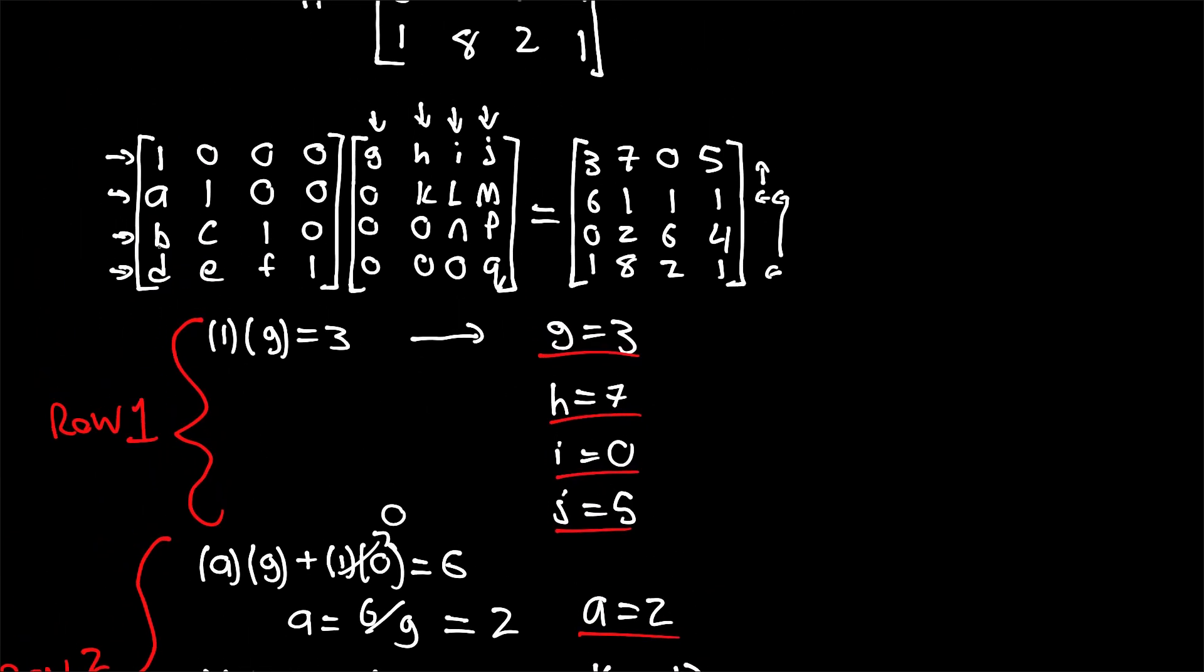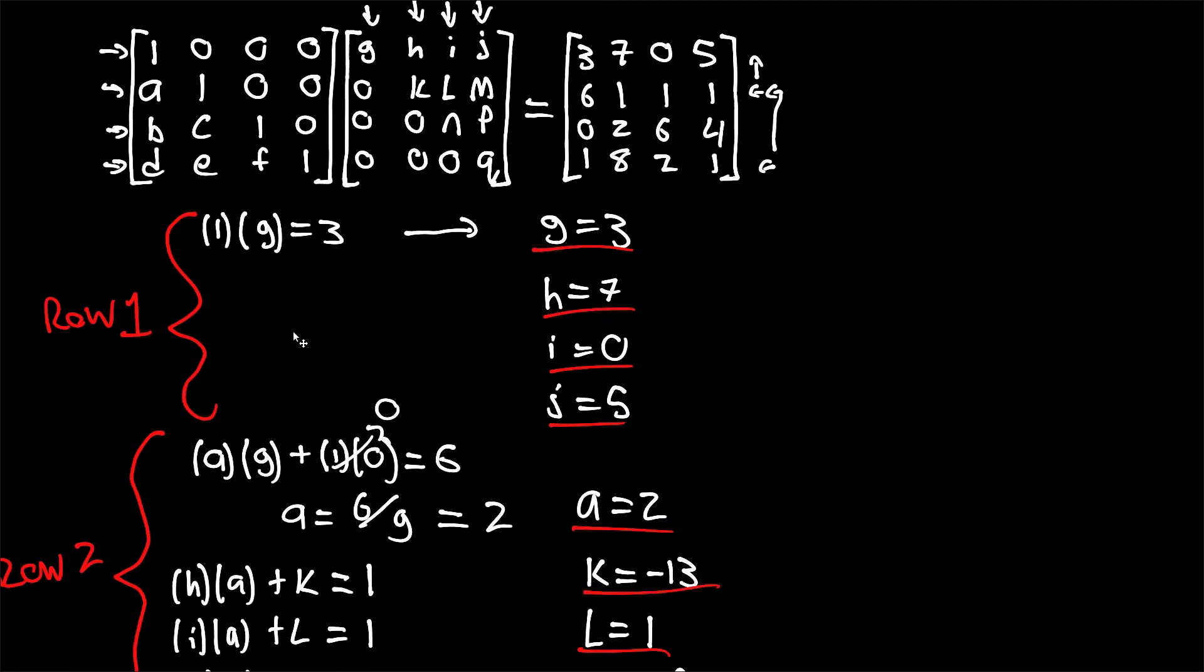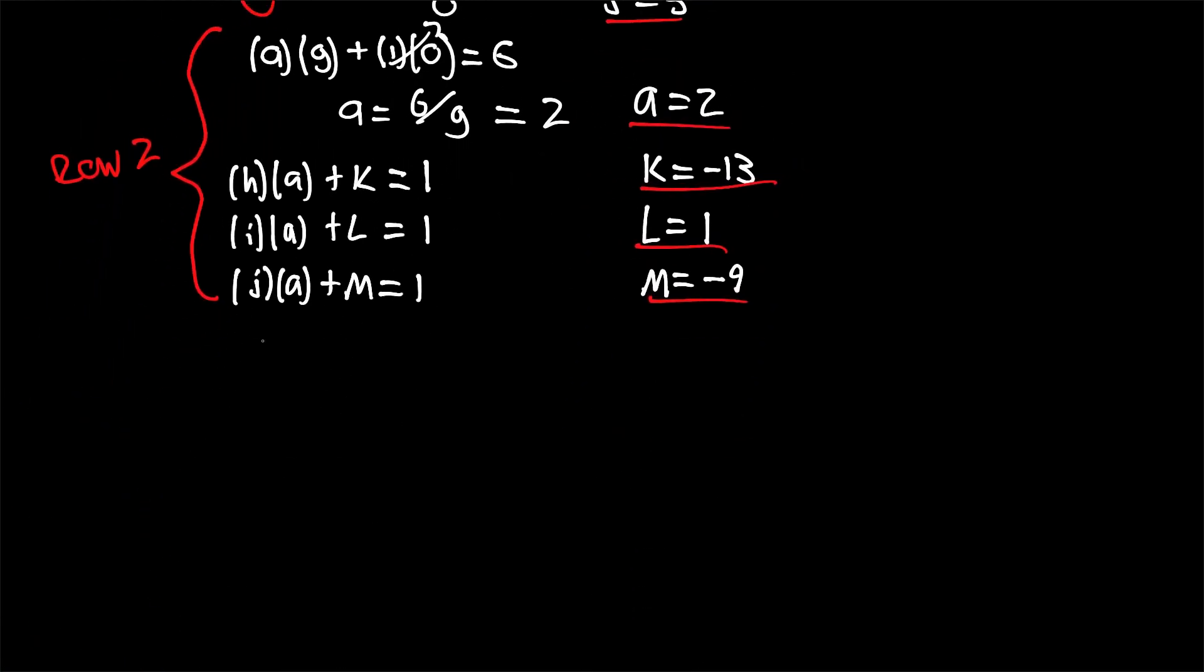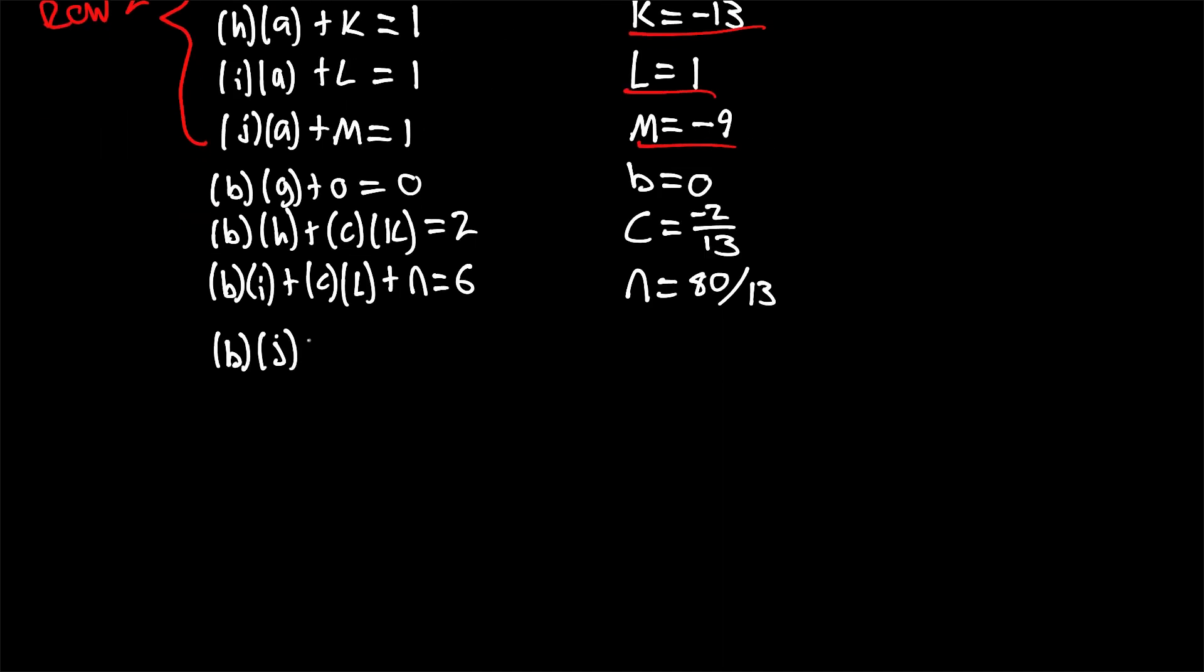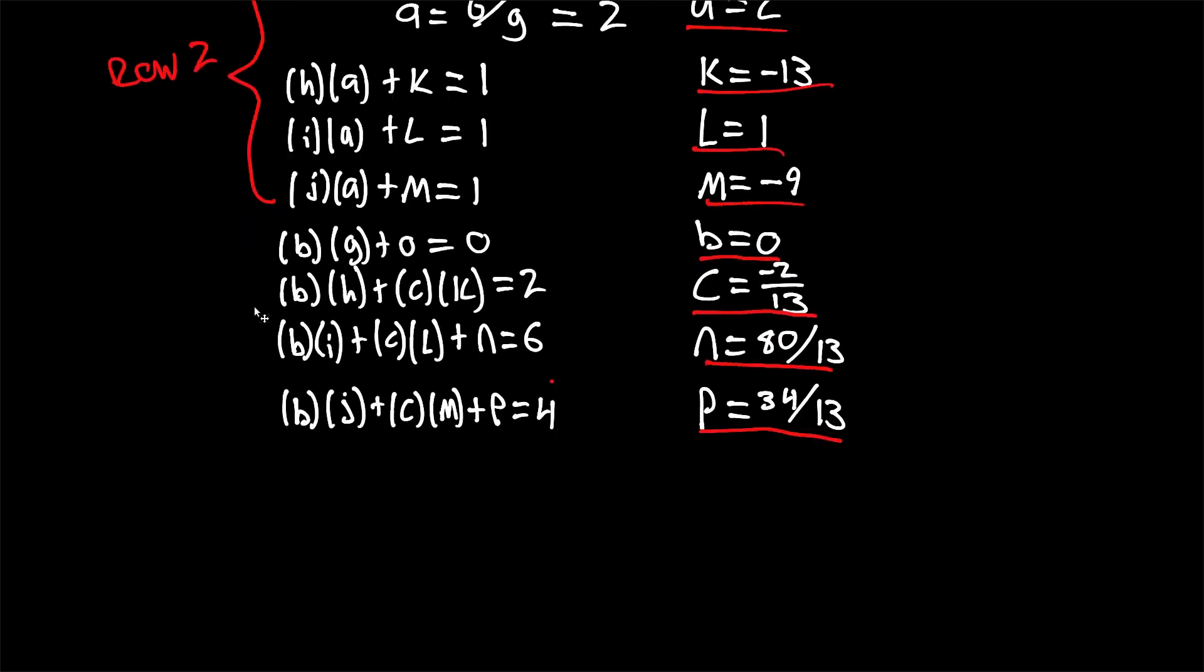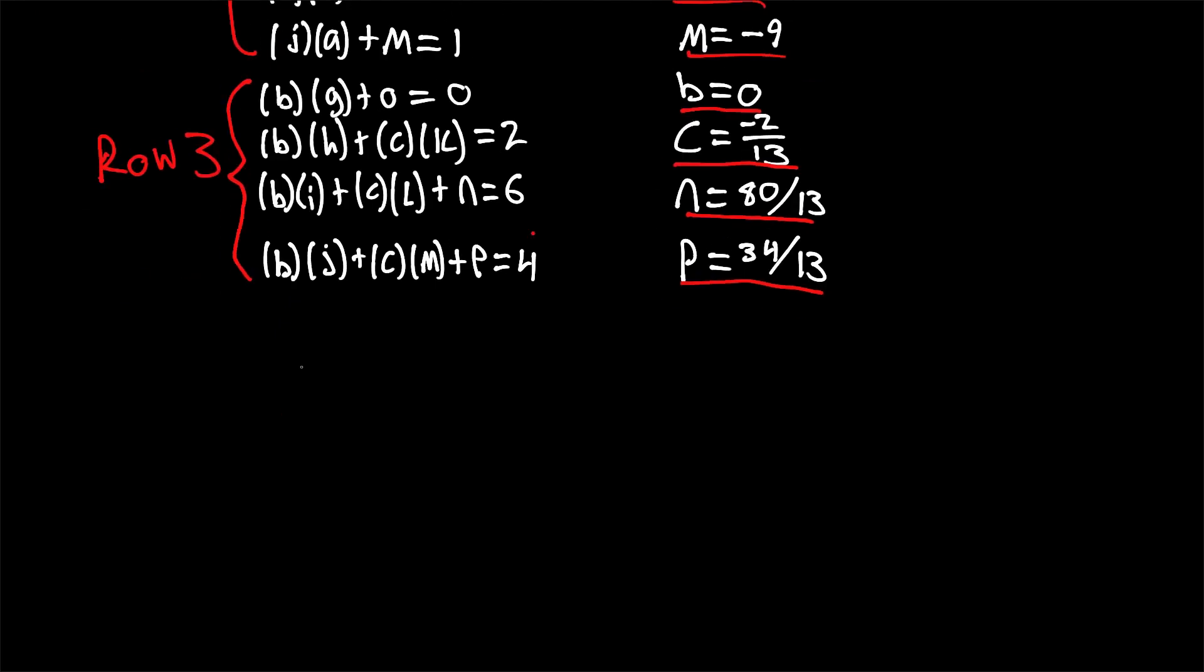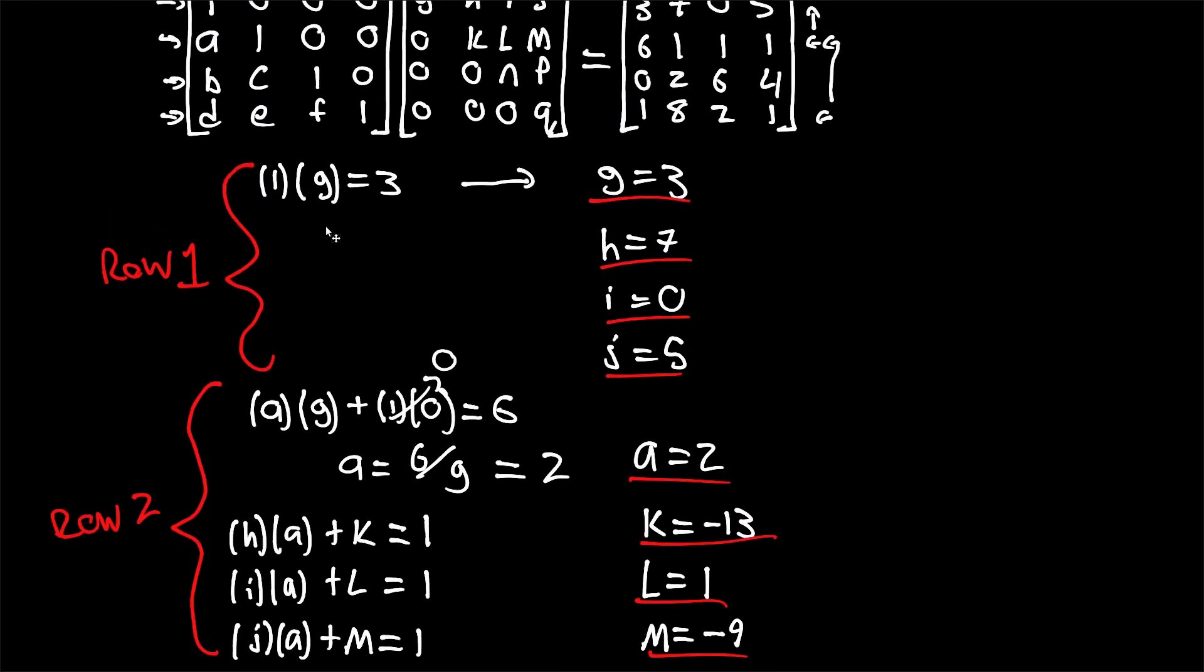This is all multiplication on the second row. Now, for the third row, we're looking at B, C, 1, 0. And we're looking at, again, the verticals here. And this is our row that we're considering on our A matrix.